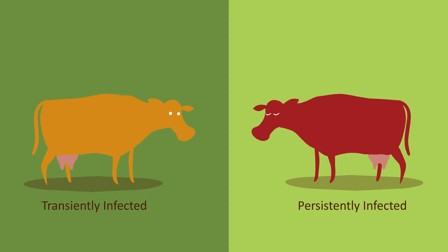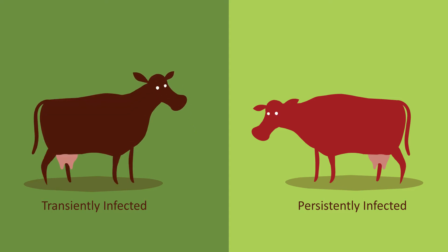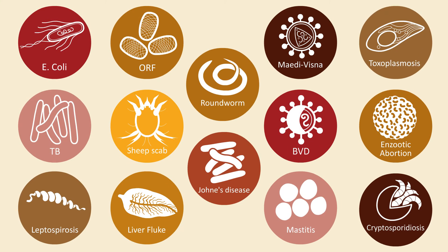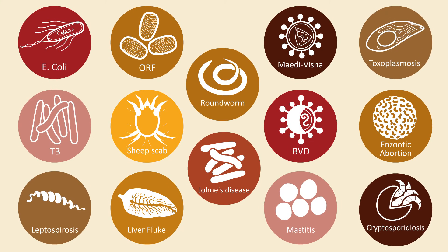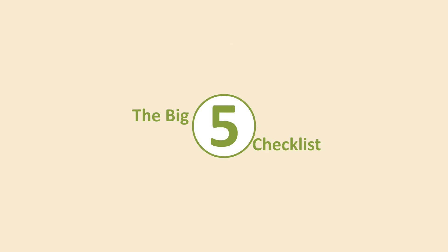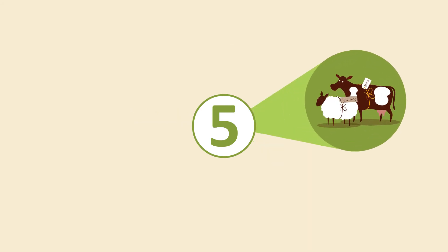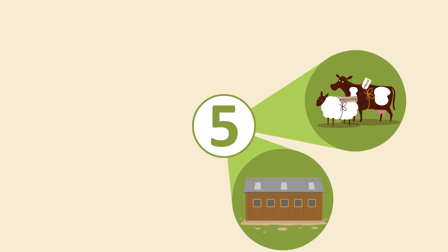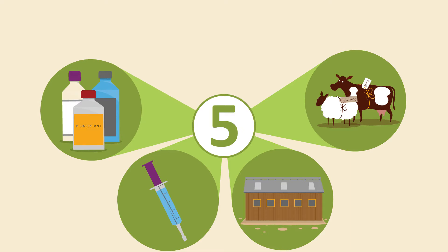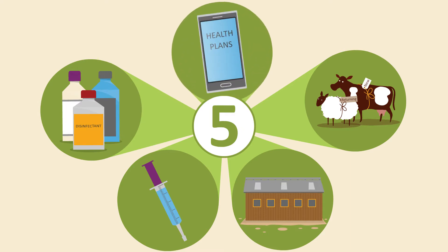When looking at these or any other diseases, a good place to start is the Biosecurity Big Five Checklist: Livestock Movement, Quarantine, Diagnostic Tests and Preventative Vaccines, Hygiene, and Health Plans.